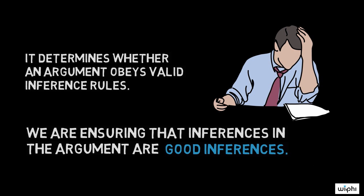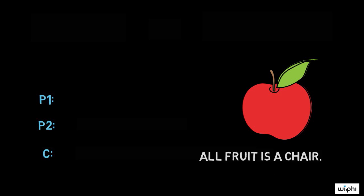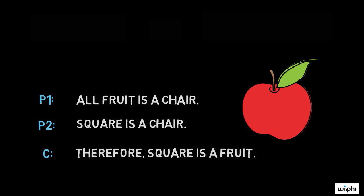I'll leave you with one last example and ask you to determine its validity or invalidity. P1: All fruit is a chair. P2: Square is a chair. Therefore, square is a fruit. What do you think?